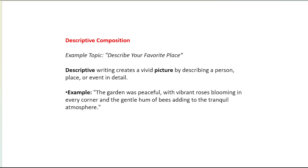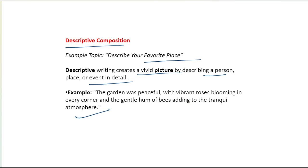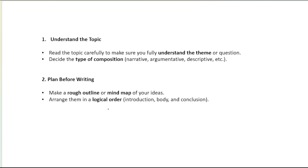Next is descriptive composition — this is the easiest. You have to describe any person, place, or event, such as your favorite place, your favorite person, or your favorite leader. Descriptive writing creates a vivid picture by describing a person, place, or event in detail. For example: 'The garden was peaceful with vibrant roses blooming in every corner, and the gentle hum of bees added to the tranquil atmosphere.' This type of composition can be made in detail.